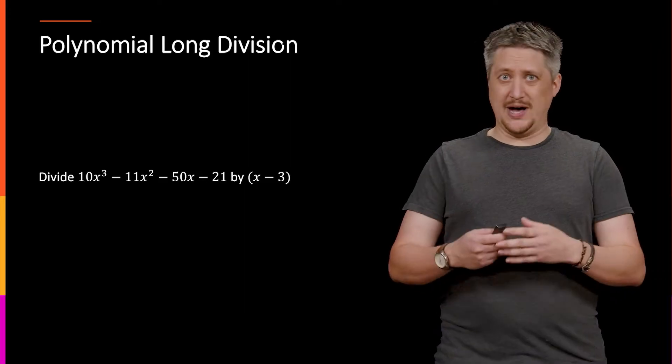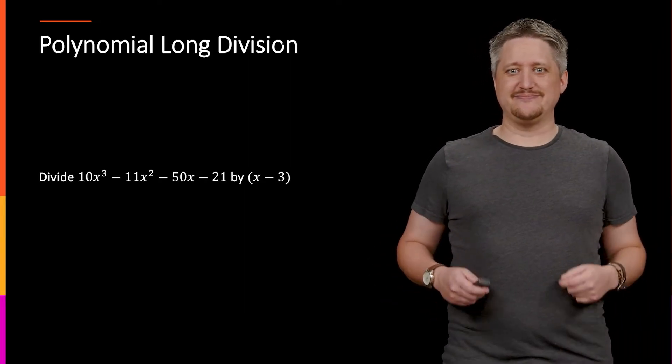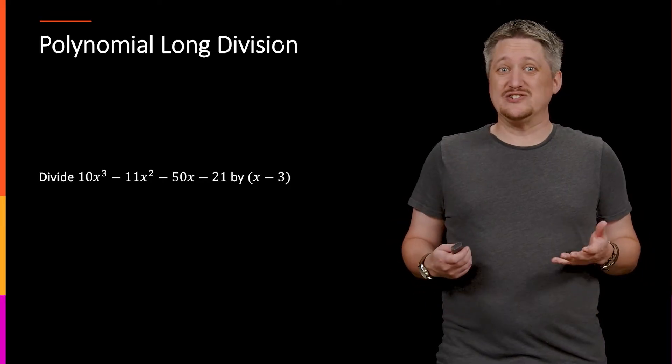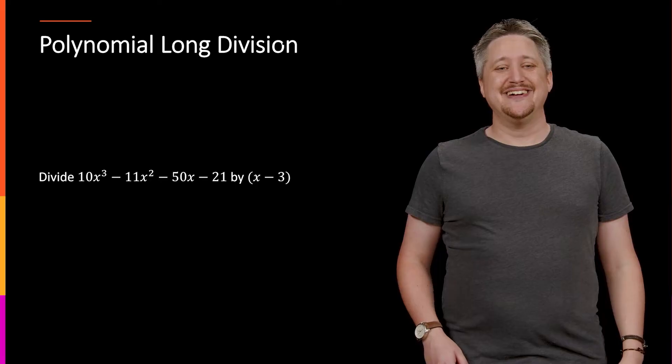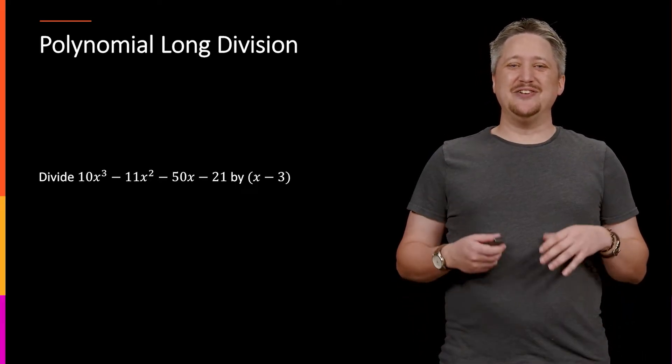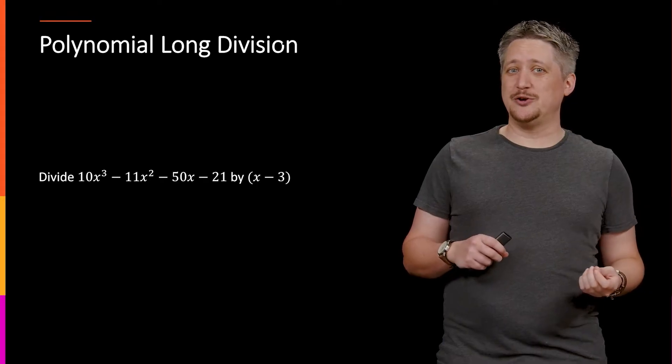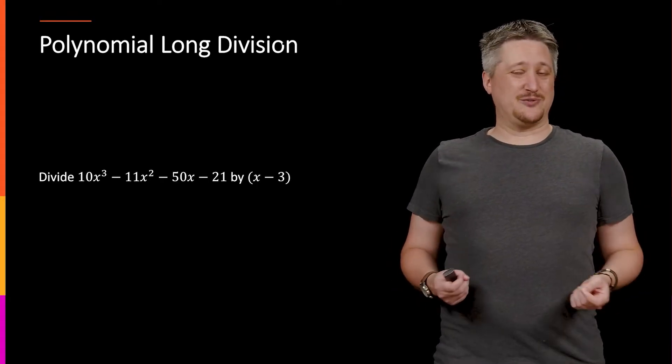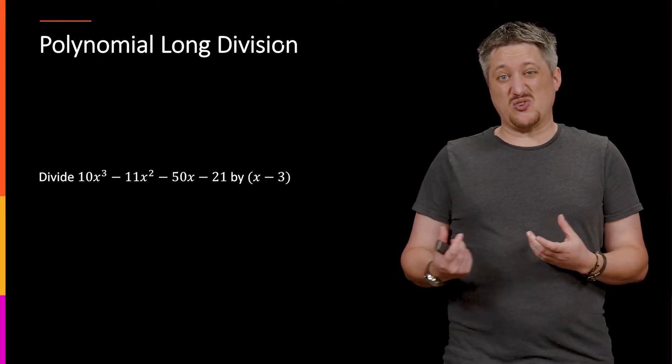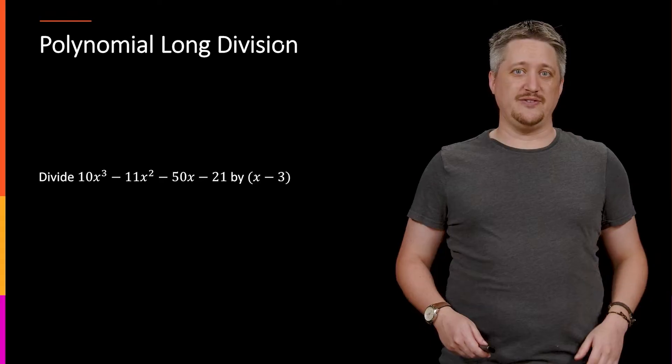Now, you might wonder why we would ever do this. And the unfortunate answer is that it turns out to be really useful, which means you're going to get to do this a bunch pretty soon. And this is because there are ways of finding out whether or not there is a zero of a polynomial without factoring it first. And sometimes that's the only way you do it. And then you have to extract that factor as a result, and you have to do that using some form of division.